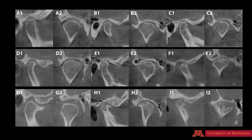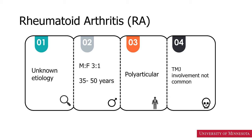Now that we have learned about osteoarthritis or degenerative joint disease, let us spend a few minutes on rheumatoid arthritis. The etiology of rheumatoid arthritis is not known. The male to female ratio is 3 to 1. Typically, the onset of rheumatoid arthritis is about 35 to 50 years of age. This disease is polyarticular, involving a lot of joints, and usually bilaterally with similar appearance on both joints. Although it is a polyarticular disease, the TMJ involvement is not common.